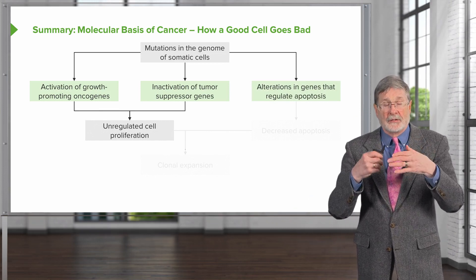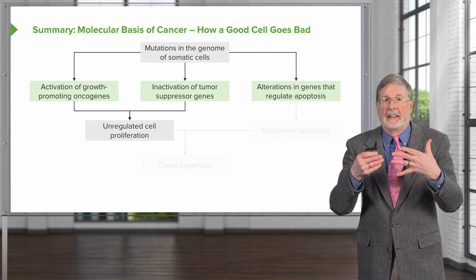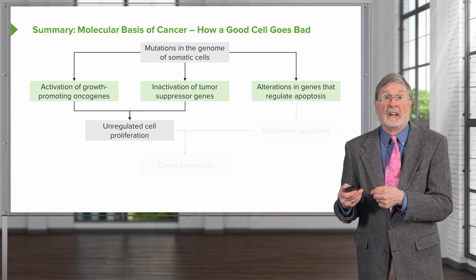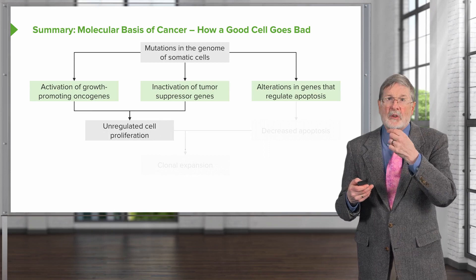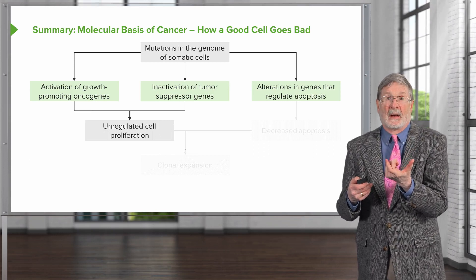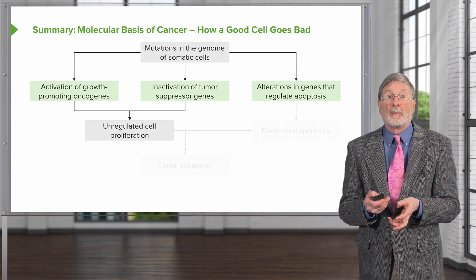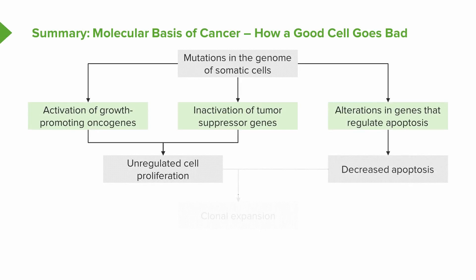Normal cells are constantly turning over, and at the same time they're normally dying. We have a tightly regulated amount of proliferation and death. The death that is happening is due to apoptosis. So if we turn off the apoptotic mechanism that would normally kill a cell when its useful lifespan is over, then we will have increased cell number — they're just not dying appropriately. That means decreased apoptosis combined with unregulated cell proliferation. We're getting closer to malignancy, but there are still a couple other steps.